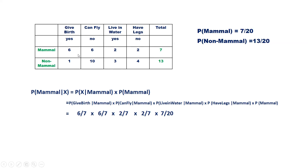Probability of give birth given mammal is 6 by 7. Probability of can fly given mammal is also 6 by 7. Probability of live in water given mammal is 2 by 7. Probability of have legs given mammal is 2 by 7. Multiplied by probability of mammal, which is 7 by 20. This equals 0.020991.